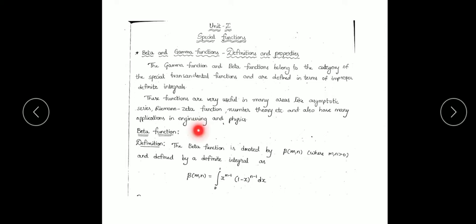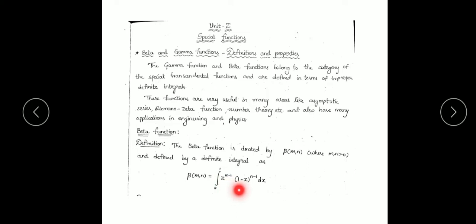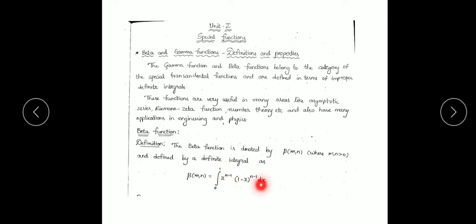Here is the definition of the beta function. The beta function is denoted by the Greek letter beta, written as β(m, n), where m and n are greater than 0, and defined by the definite integral: β(m, n) = integration from 0 to 1 of x^(m−1) times (1−x)^(n−1) dx. Here m and n are the deciding factors, and they are always greater than 0. This is an improper definite integral.